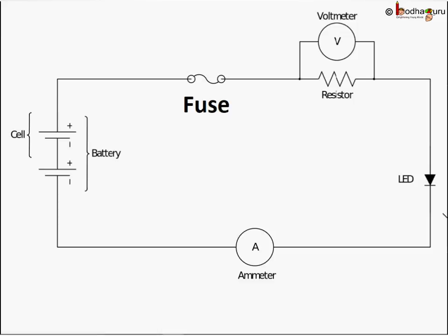If electric current larger than the specified value flows through the circuit, the temperature of the fuse increases and it melts the fuse wire and breaks the circuit. As it is series circuit, current stops flowing and protects our appliances.